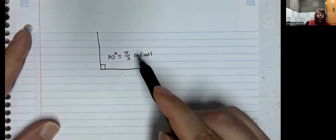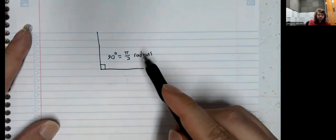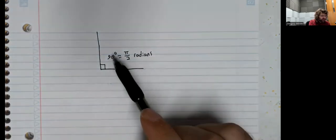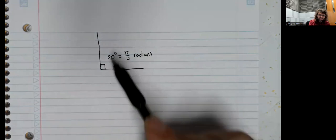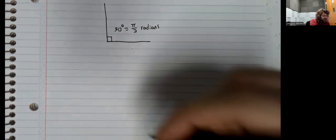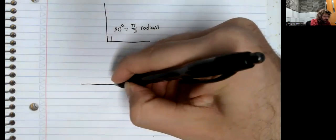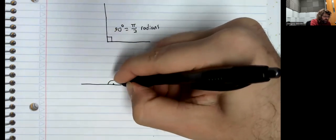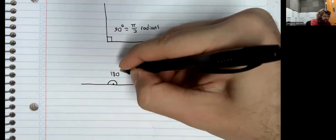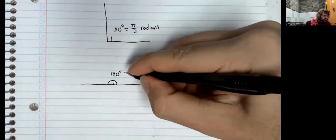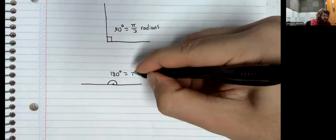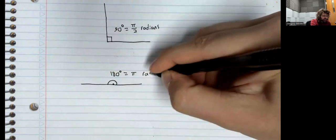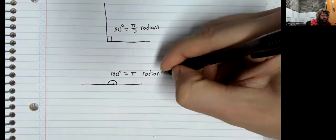There is no radian symbol. No equivalent to this little dot. A 180-degree angle is pi radians.